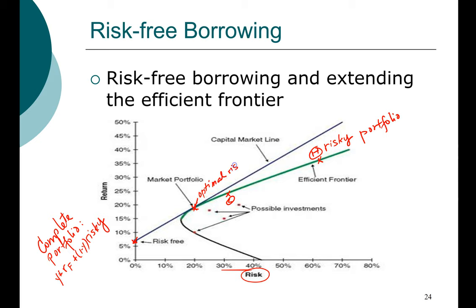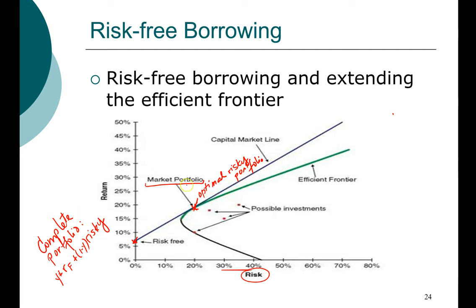Because everybody agrees this is the optimal risky portfolio, they all want to choose it, making all other risky portfolios less desirable. If everybody buys into this optimal risky portfolio, by definition it becomes the market, because once everyone is invested in it, that is the entire market. So investors only have to make one simple choice: how much to put into the risk-free asset and how much to put into the market portfolio.